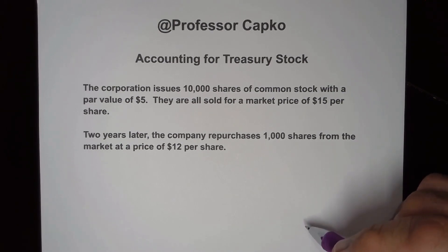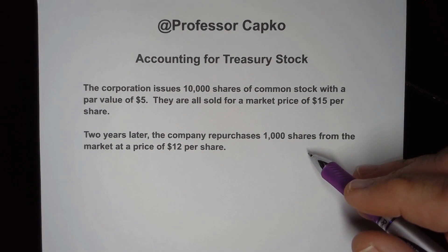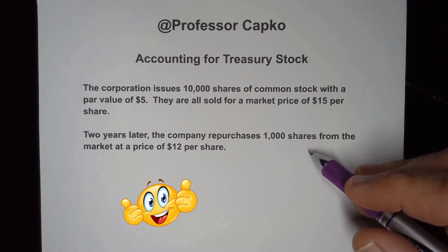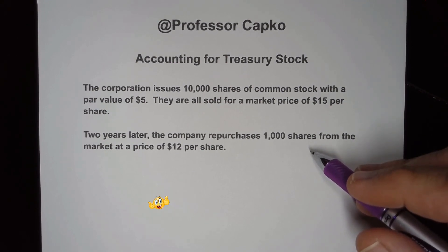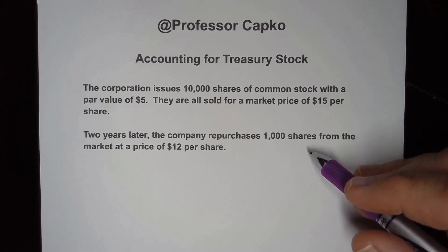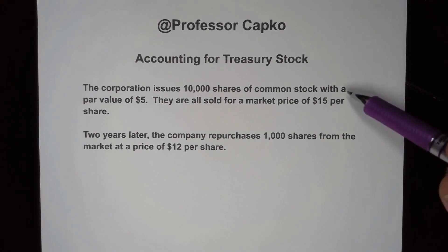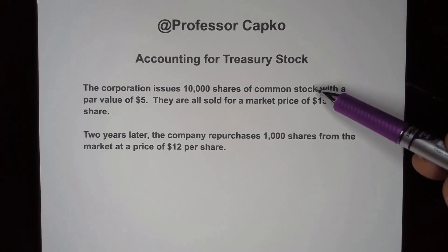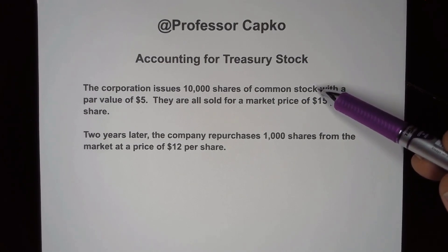Are you someone who gets your debits and credits mixed up and thinks accounting is just very difficult? Let's talk about this one — we're going to be accounting for Treasury stock. Treasury stock is when a company repurchases some of the stock that's been issued and is outstanding with investors from the open market.